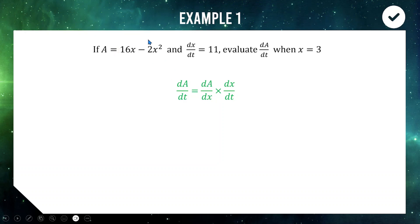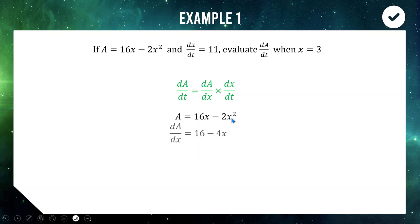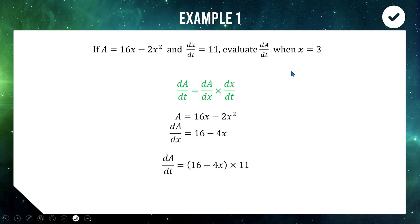dA/dx we can get by differentiating the function at the start; dx/dt has been provided as 11. If A = 16x − 2x², then dA/dx = 16 − 4x. So dA/dt = (16 − 4x) × 11. We evaluate this when x = 3: 16 − 4(3) = 16 − 12 = 4, and 4 × 11 = 44. So 44 is our final answer.